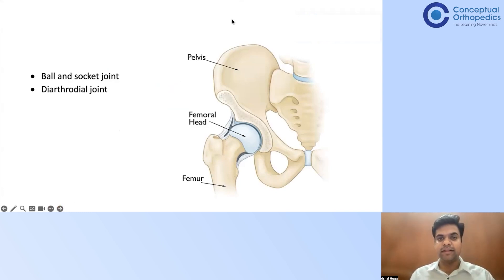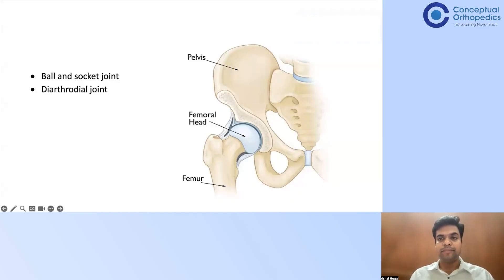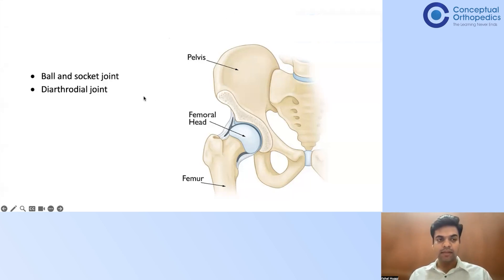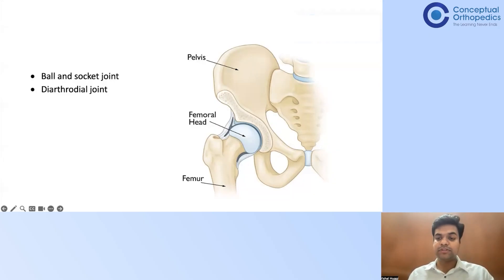There's a ball — that is the femoral head — and there's a socket — that is the acetabulum. It is called a diarthrodial joint. What is a diarthrodial joint? Can anyone answer? Diarthrodial joint — what does diarthrodial joint mean?